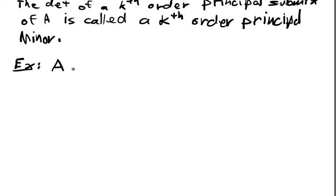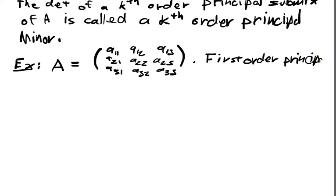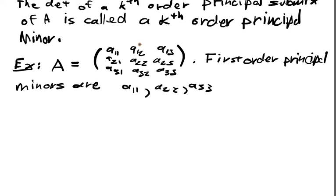Suppose we have a 3x3 matrix with entries A11, A12, A13, A21, A22, A23, A31, A32, A33. The first order principal minors and matrices are A11, A22, and A33. A11 is obtained by deleting the second row and second column, and third row and third column. A22 by deleting first row, first column, third row, third column. A33 by deleting first row, first column, second row, second column. Those are the first order principal minors.